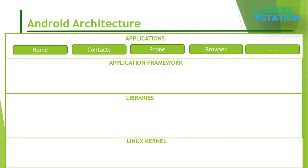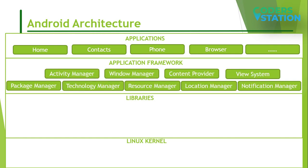Next layer is Application Framework. Application Framework provides several important classes which are used to create an Android application. It provides a generic abstraction for hardware access and also helps in managing the user interface with application resources. Generally, it provides the services with the help of which we can create a particular class and make that class helpful for the application creation. The services include Activity Manager, Notification Manager, View System, Package Manager, etc.